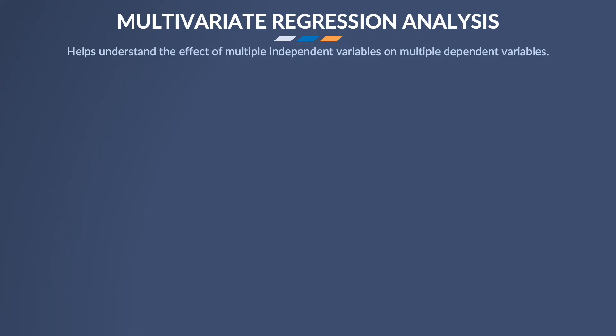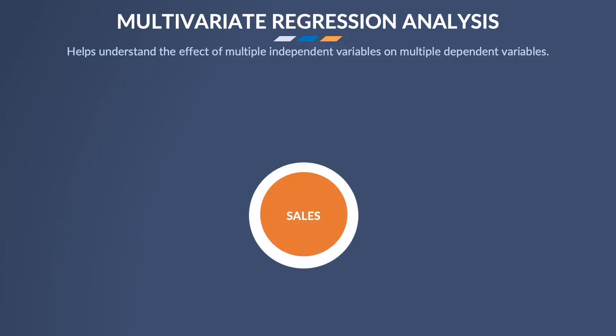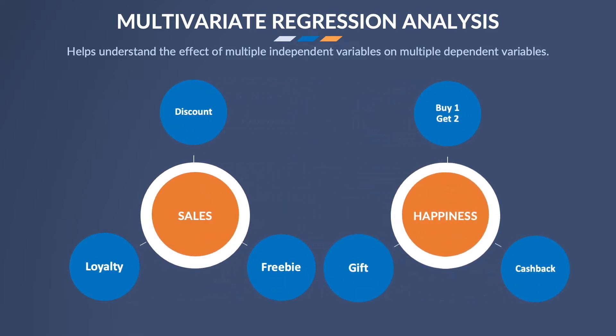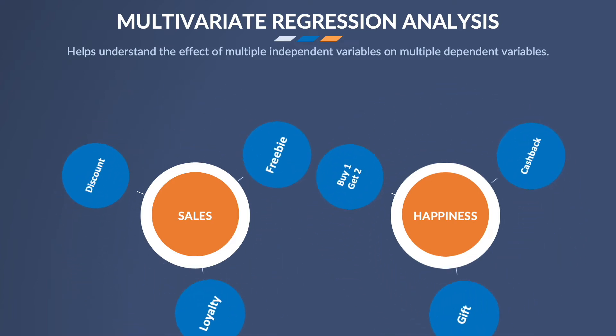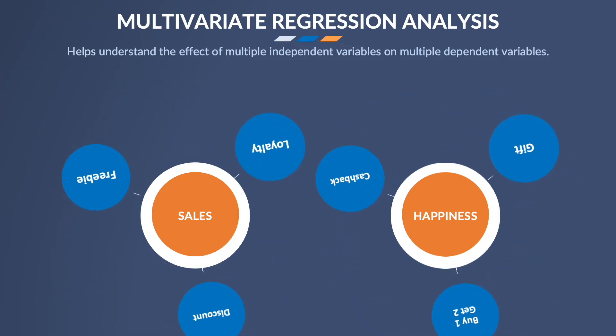For example, if you want to see how a company's promotional activities are affecting its performance, you will need to check discounts, coupons, buy one get one free offers, loyalty points, and other freebies. On the other hand, company performance indicators can be sales and customer satisfaction. Since we want to check how these five independent variables are affecting two dependent variables, we are going to apply the multivariate regression test.